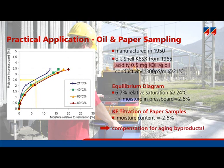The conclusion to be drawn from this measurement of an elderly transformer is that compensation is needed to counter the effects of the byproducts created by aging, for both the equilibrium approach and the dielectric response approach.